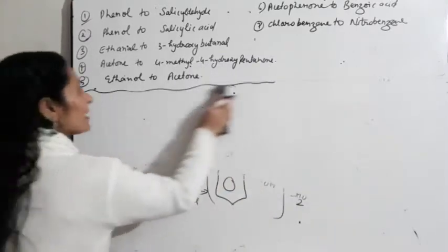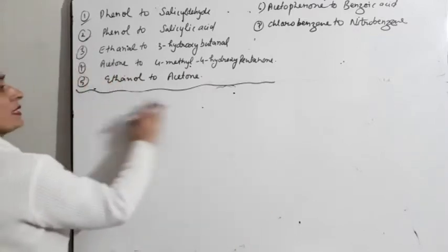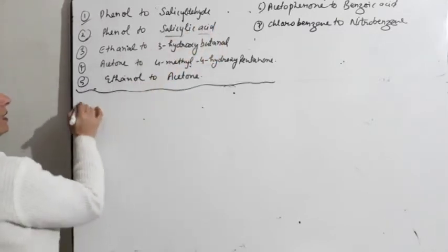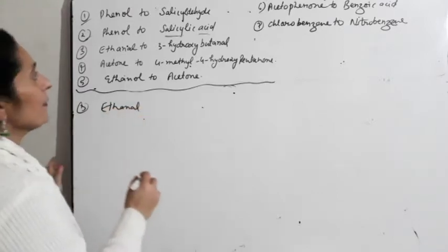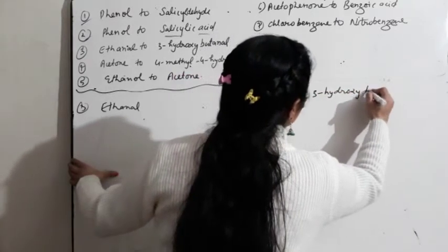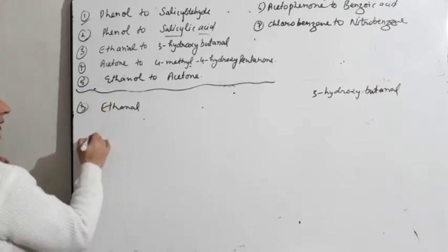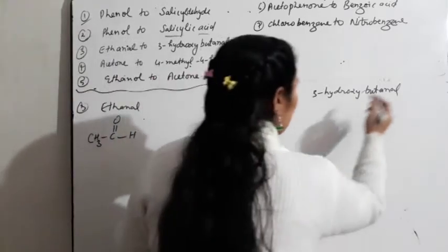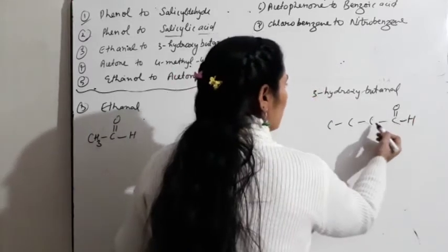Yeh Reimer-Tiemann reaction thi — chahe aap chloroform se karein chahe CCl4 se. Chloroform se karenge to aldehyde aur CCl4 se karenge to acid. Third is ethanol to 3-hydroxybutanal. Yeh raha: CH3-C double bond O-H aur mujhe yahan chahiye butanal — 1,2,3,4 carbon. Idhar ban gaya CHO aur 3 ke upar hydroxy.